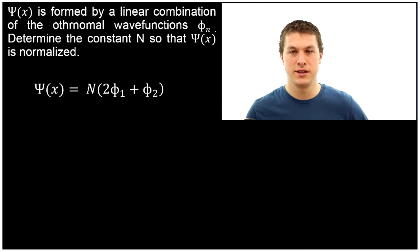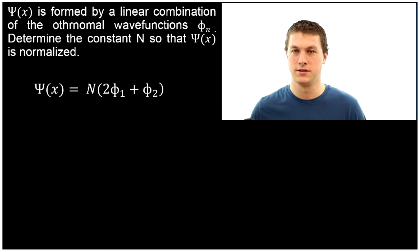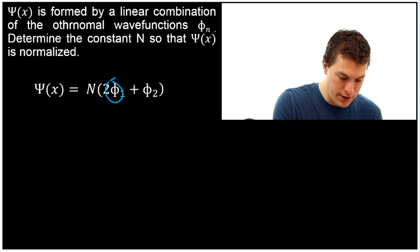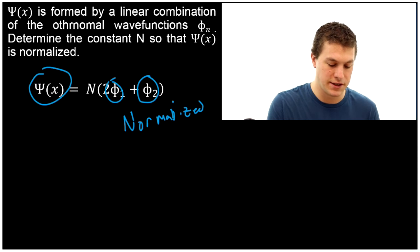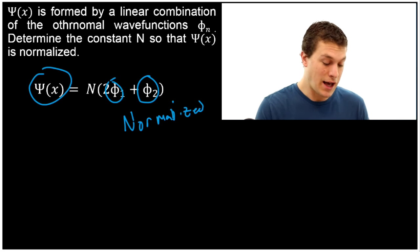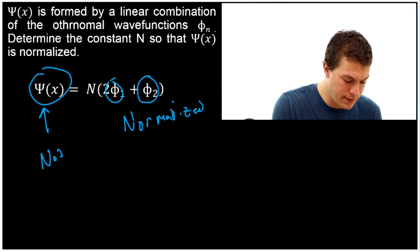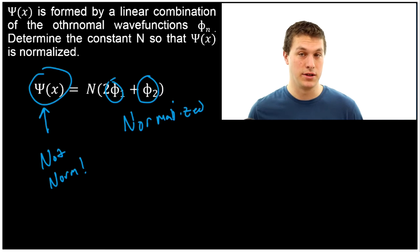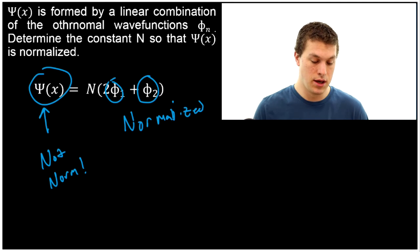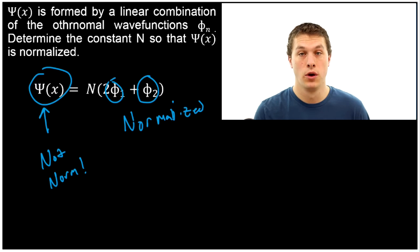Now, you might be confused, because you might say to yourself: I thought you just told me that ortho-normal wave functions are normalized, so what are we doing normalizing this thing? Well, here's the key thing to realize. Phi 1 and phi 2 — those are normalized. However, psi over here is not normalized. So when I take combinations of normalized wave functions and mix them together, I don't always get out something that's normalized. In fact, normally I won't. So what I have to do is normalize that resulting mixture, and that's where the ortho-normal properties will make our life a lot easier.